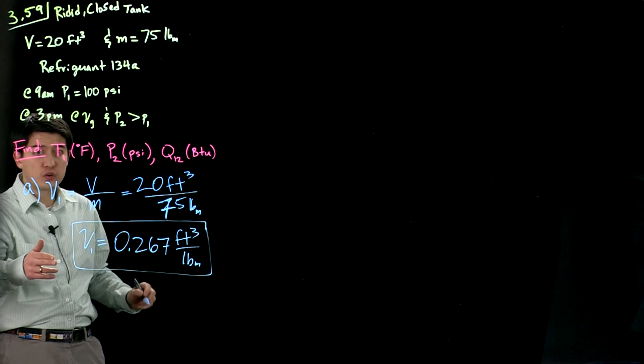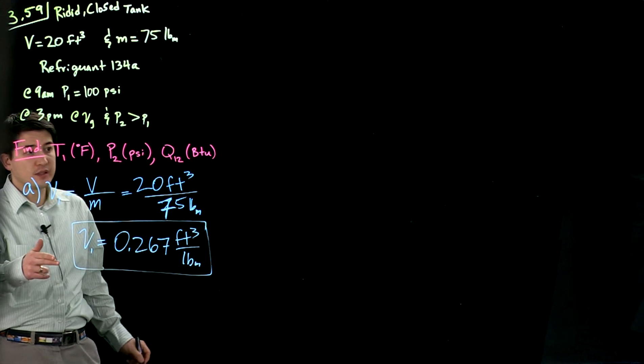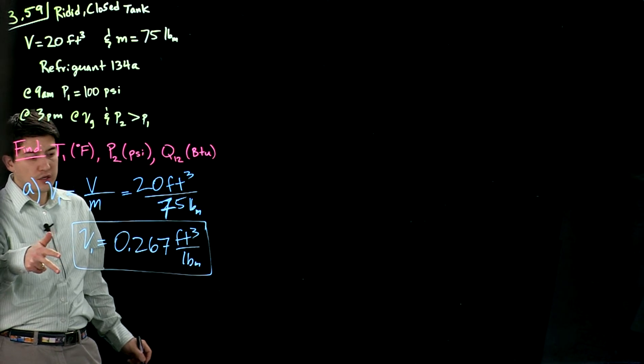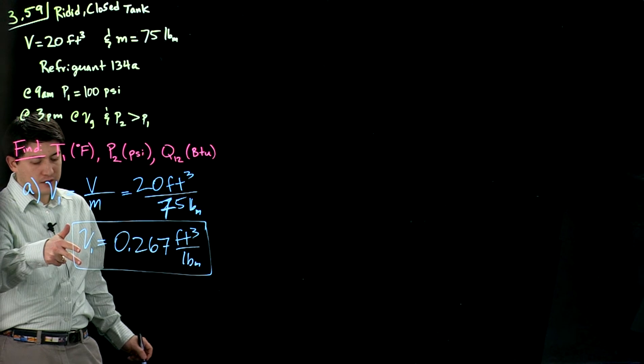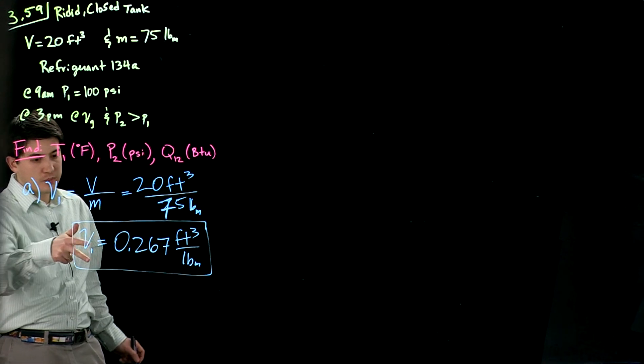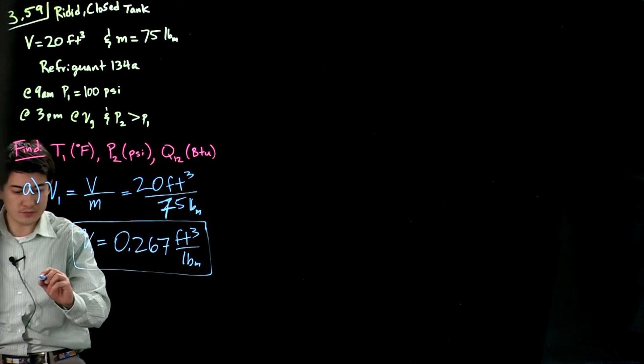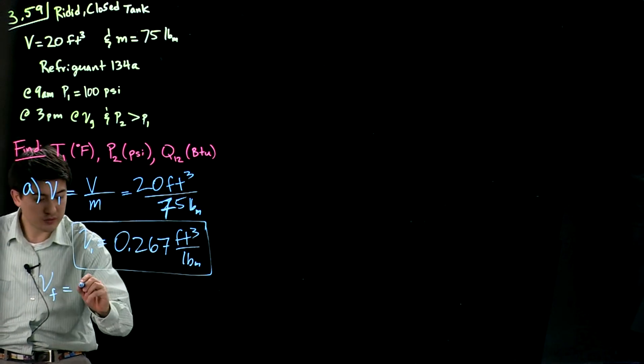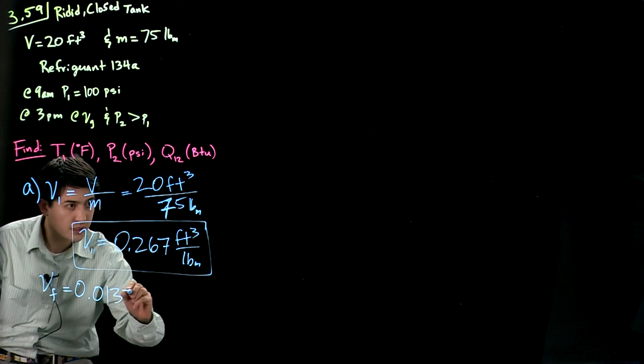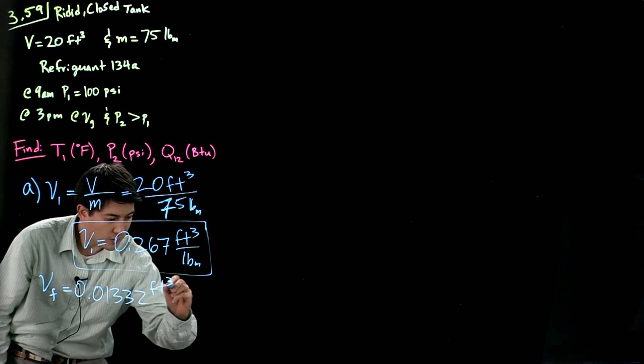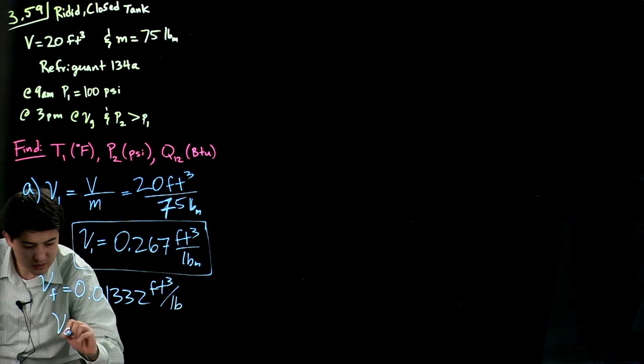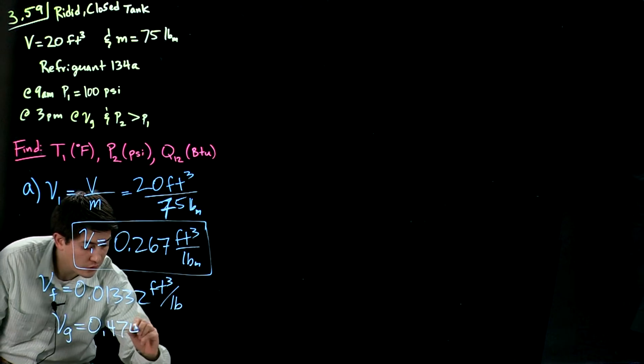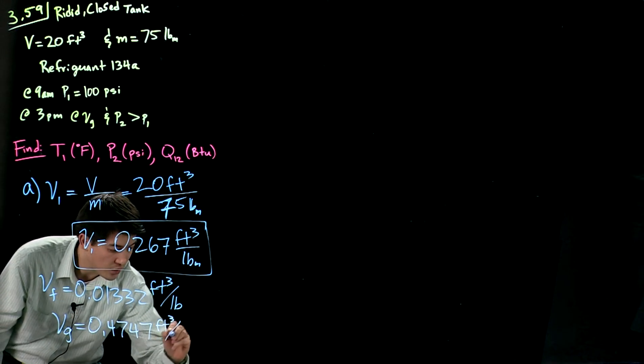This is going to give us a specific volume of 0.267 cubic feet per pound mass initially. We can go over to table 11, A11E, and we can look up for 100 psi. At this specific volume, or at 100 psi, to find out that we have a saturation of liquid volume of 0.01332 cubic feet per pound and a saturation gas specific volume of 0.4747 cubic feet per pound.